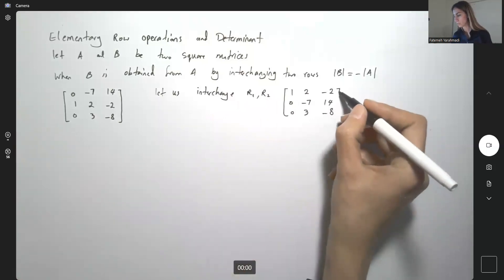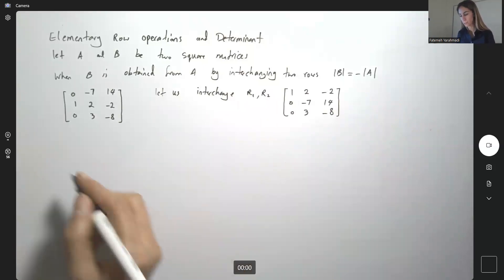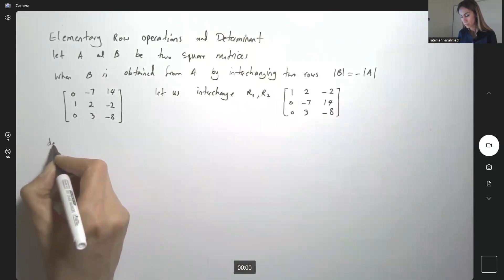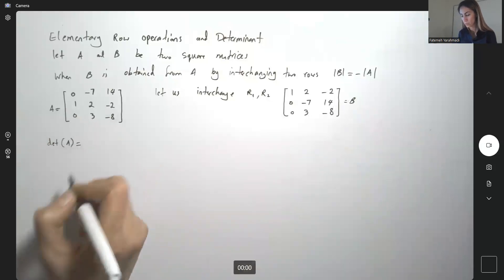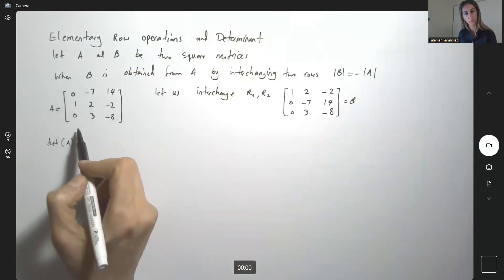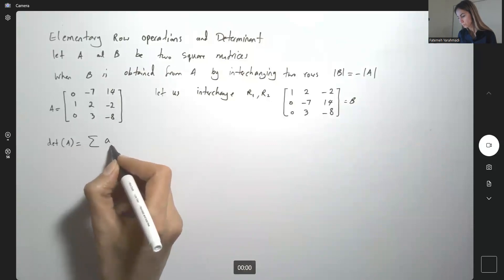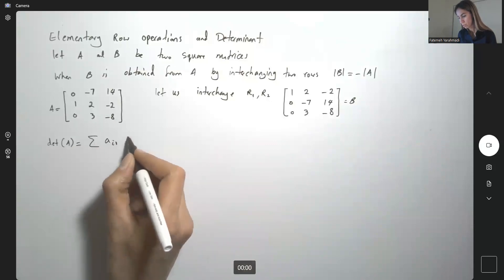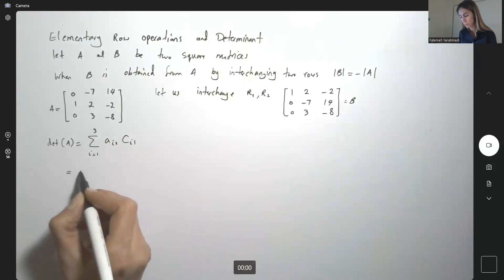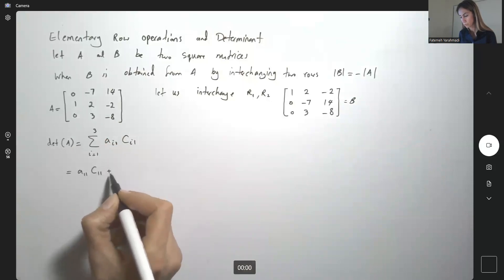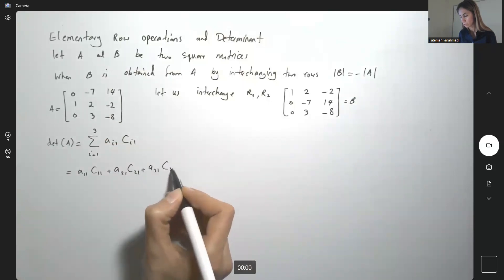So if I calculate the determinant of this matrix and this matrix, let's see what the relation is. Let's call the original matrix A and the new one matrix B. The determinant of A, expanding along the first column, is the sum of A_{i1} · C_{i1} for i from 1 to 3. That gives A_{11}·C_{11} + A_{21}·C_{21} + A_{31}·C_{31}.